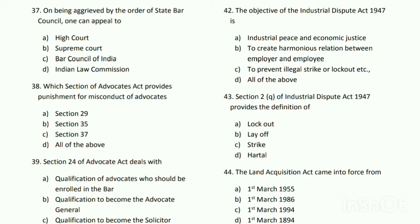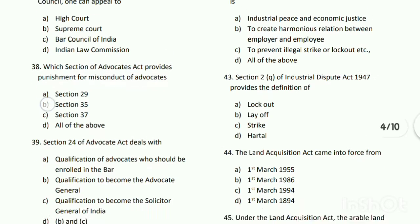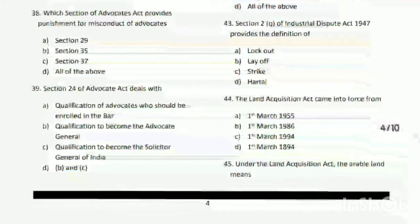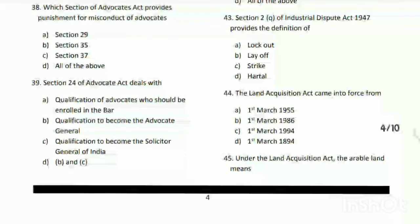Question number thirty-eight: which section of the Advocates Act provides punishment for misconduct of advocates? The answer is B - Section 35.